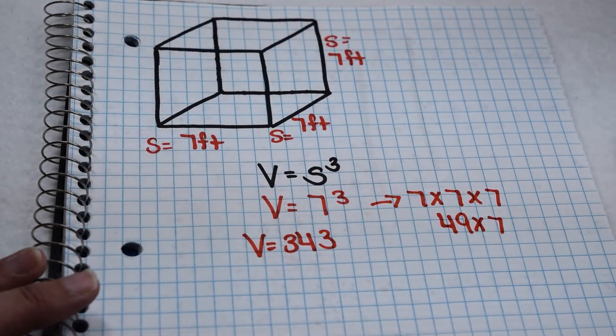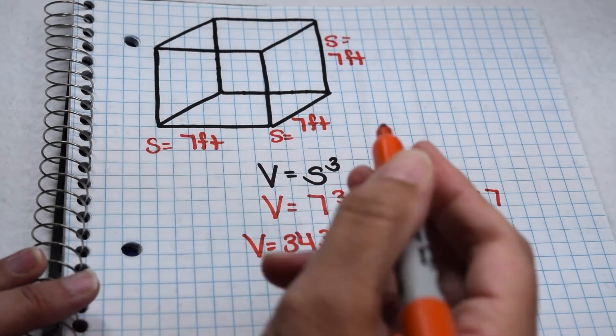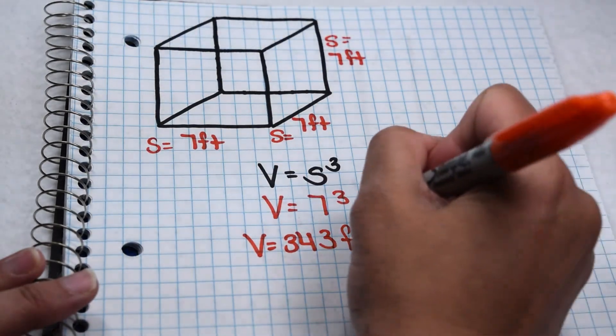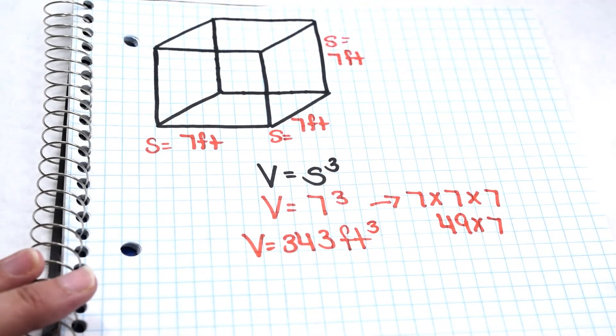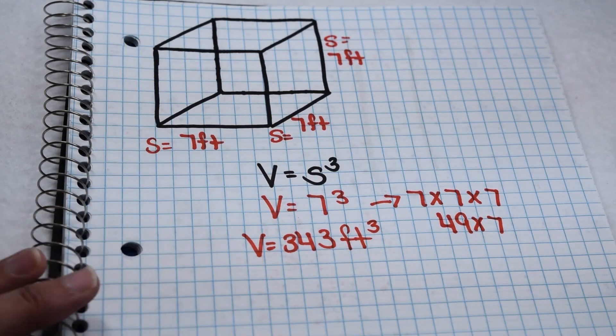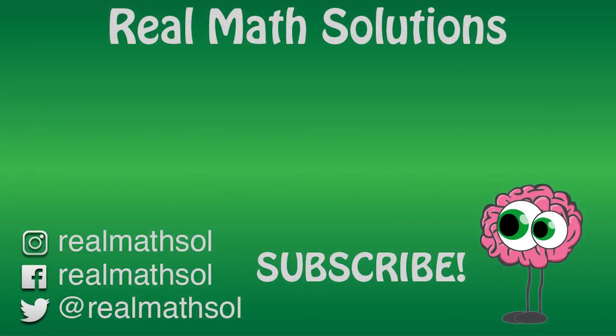So my volume comes out to be 343, but it needs a label. 7 is labeled in feet. That's going to be 343 feet. And since volume is a three-dimensional measurement, that's going to be to the third power. So we would read that as the volume of this cube is 343 cubic feet.